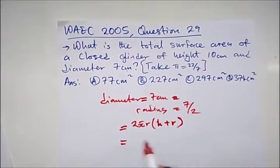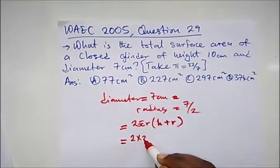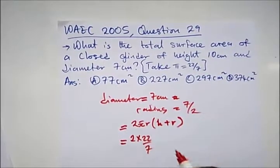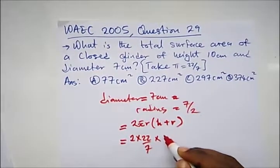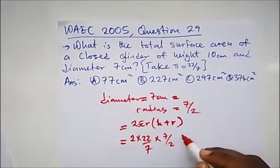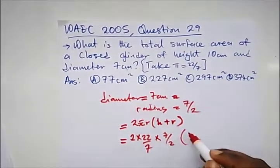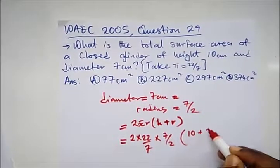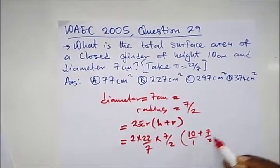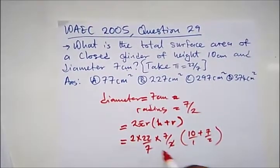Here all we need to do is just put the values into our formula. So we have 2 times 22 over 7, that's π is 22 over 7, times what's our radius, 7 over 2, bracket, what is our height? Our height is 10 plus 7 over 2.